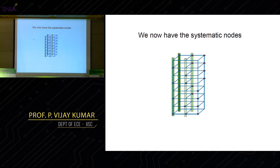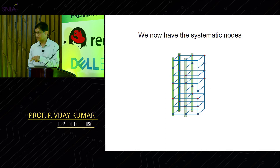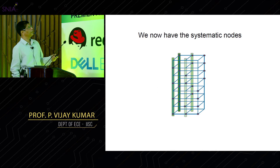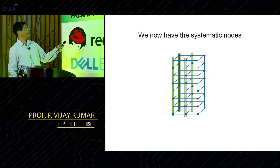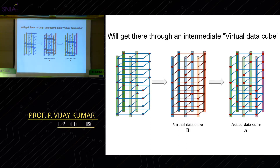Now the data nodes are filled — we call these systematic nodes in coding theory. It remains to calculate the contents of the parity nodes. We follow a somewhat indirect path through several steps, each of which is simple. We go from where parity nodes are yet to be computed to where they have been computed, passing through an intermediary called the virtual data cube, which we call B.